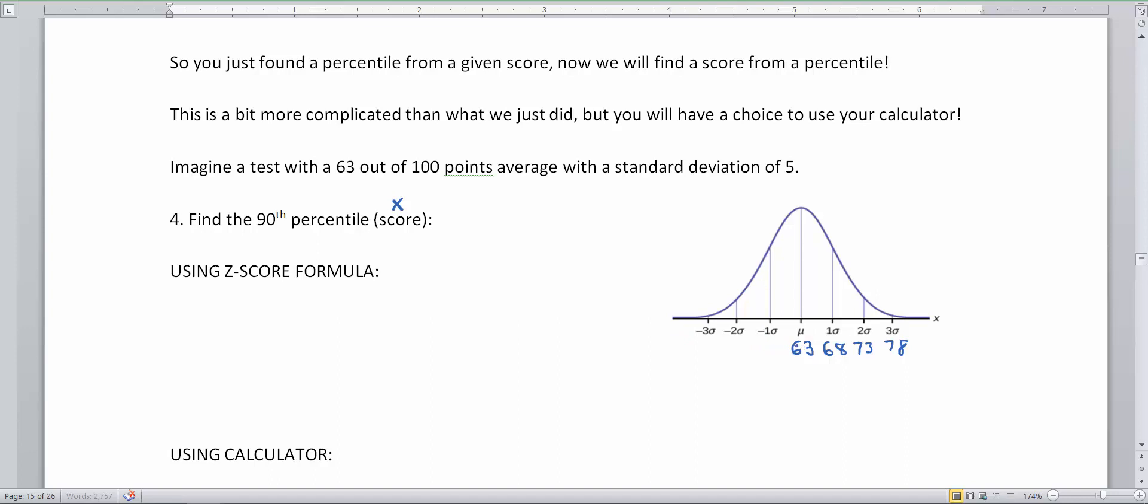Now if I go down by my standard deviation, every standard deviation mark, this will give me a 58, and then a 53, and then a 48. So what number in blue would be a 90th percentile? Well unfortunately it's not any of these right on the money, but what we have to find is we have to find the number that is the 90th percentile.